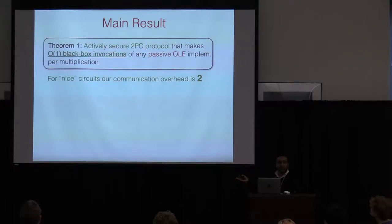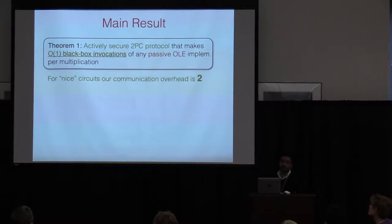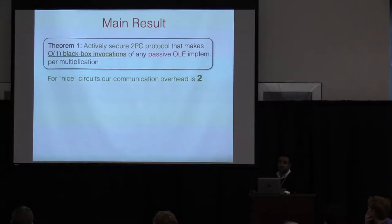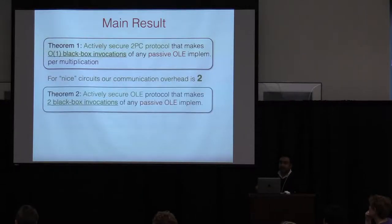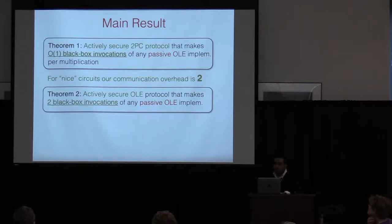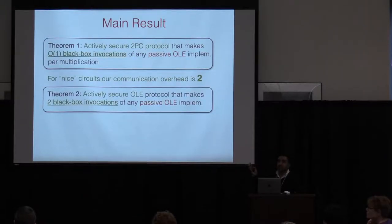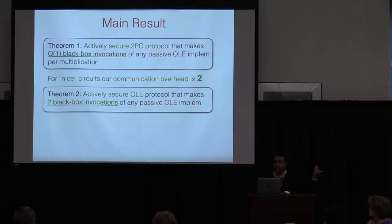For people familiar with passive protocols, think of GMW. It's the passive version, and we get active security at twice the cost of GMW. This is the communication overhead; the computational overhead is also not much higher. Just to clarify, this is primarily for arithmetic functions, not Boolean.